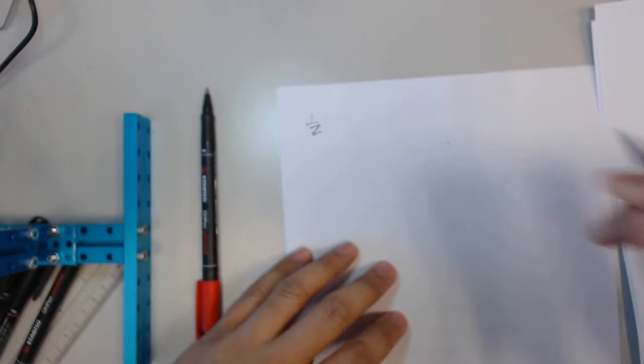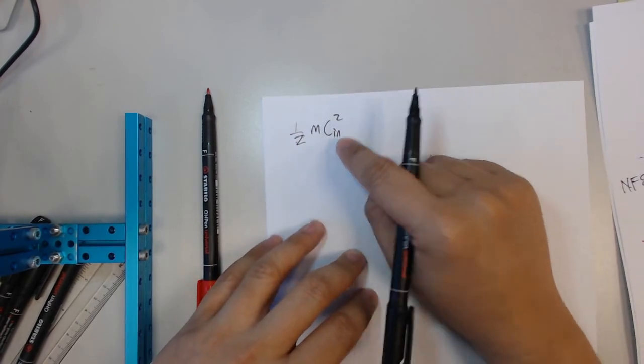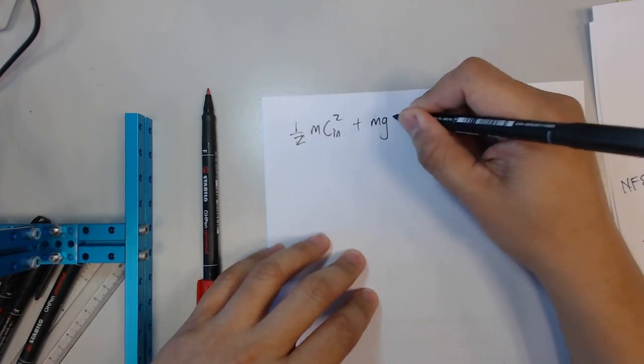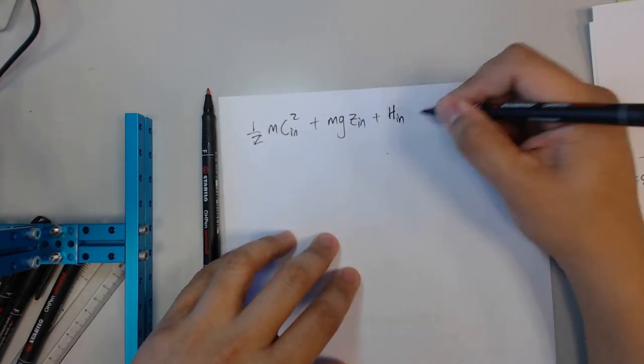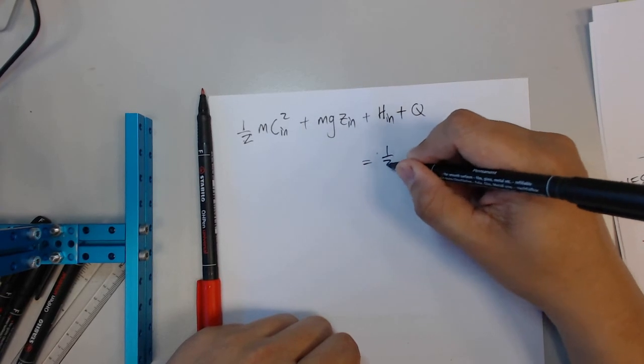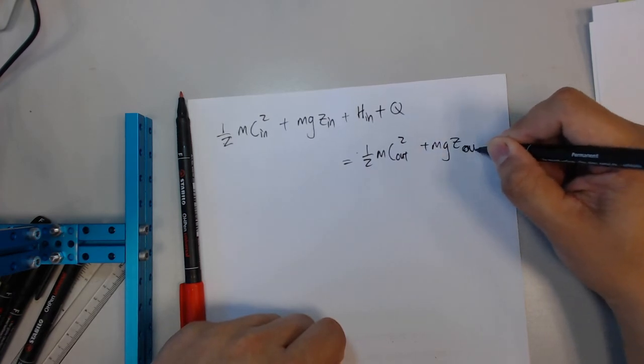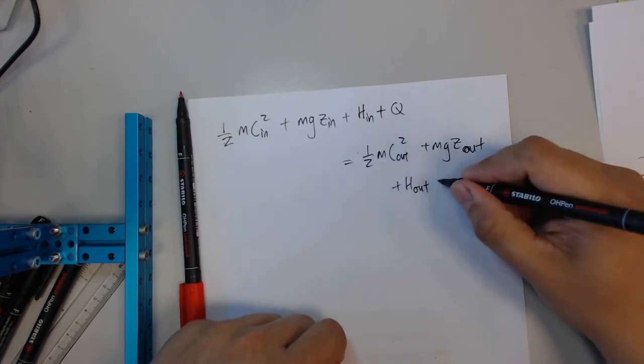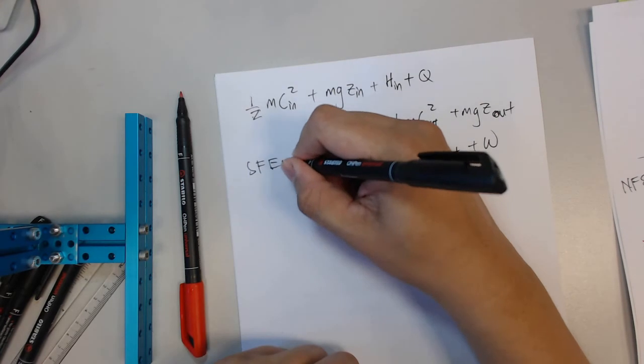So something is going to happen, and then the outlet will be produced. There is a different state from the inlet. So the equation will be something like this: you're going to get half mass C_in squared, so C is flow speed, this is actually kinetic energy, plus mass g z_in, this is your potential energy, plus enthalpy, plus Q which is the heat in the system. It's going to be half mass C_out squared, plus m g z_out, which means this is the kinetic outlet, potential outlet, enthalpy outlet, and the work that is happening in the system.